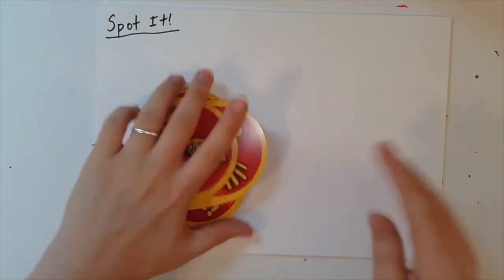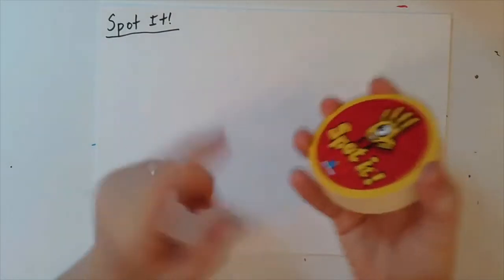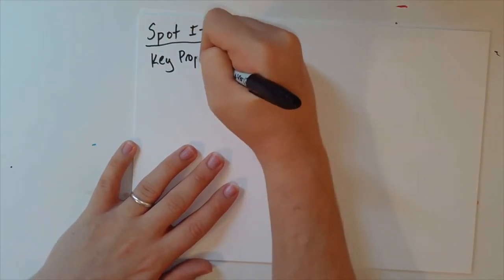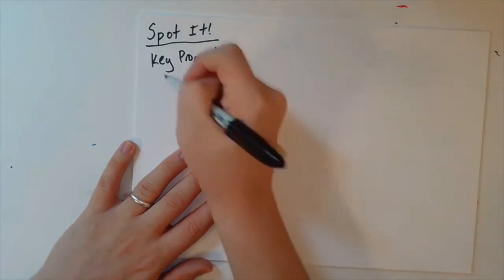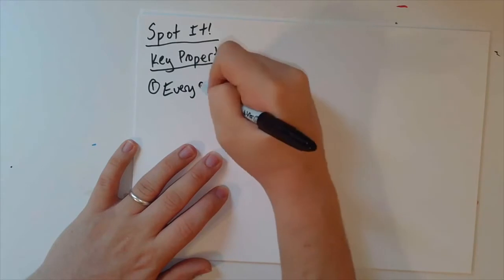So I want to write down what the mathematical properties of this deck are, to start with. Just the things we've observed from playing with it for the short bit of time that we have so far. And then I want to ask some questions about what could be true about the deck. And certainly, we'll talk about generalizations. But for now, let's write down here are the key properties. So one, every card has exactly eight symbols.